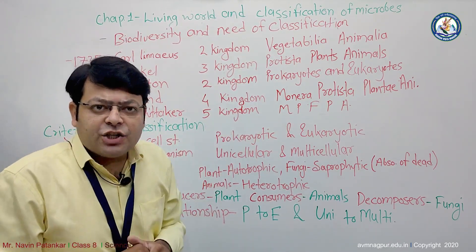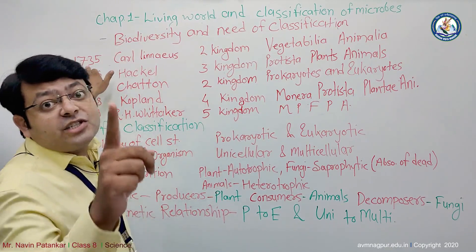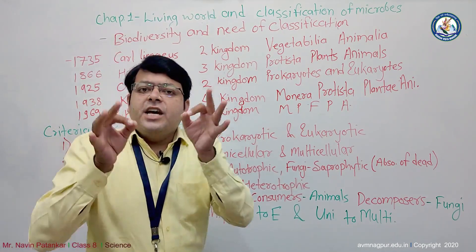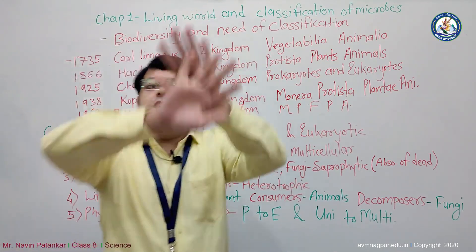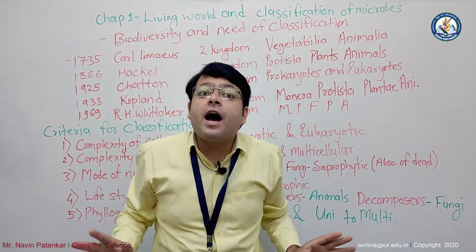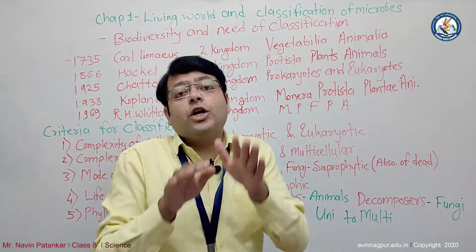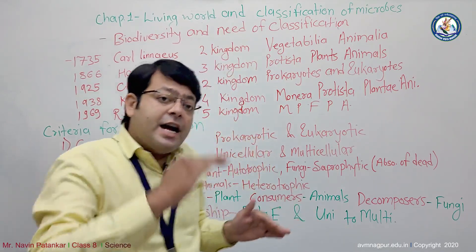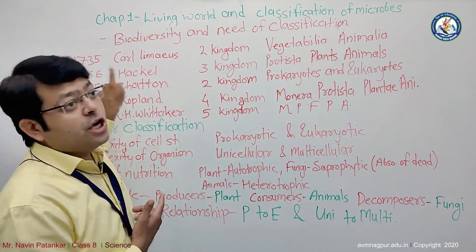In the classification of microbes, the very first classification came into history in 1735, given by Carl Linnaeus. With that, he invented a two-kingdom classification system, dividing all living systems into only two kingdoms: Vegetabilia and Animalia. But that system had some limitations, and because of those limitations, that idea was dropped.